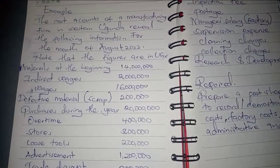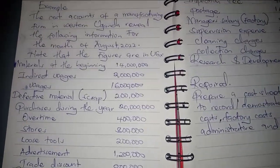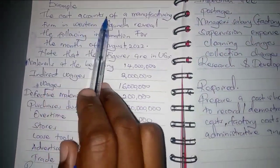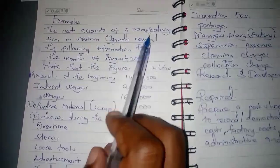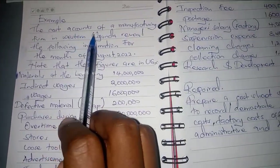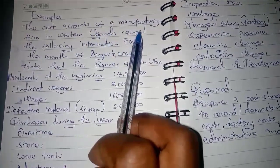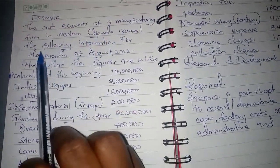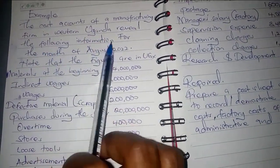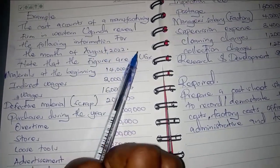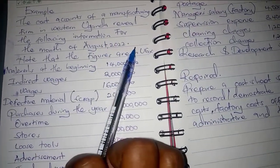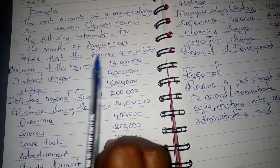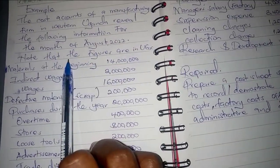Let's have an example of the cost sheet. The cost accounts of a manufacturing firm in western Uganda reveal the following information for the month of August 2022. Note that the figures are in UGX.